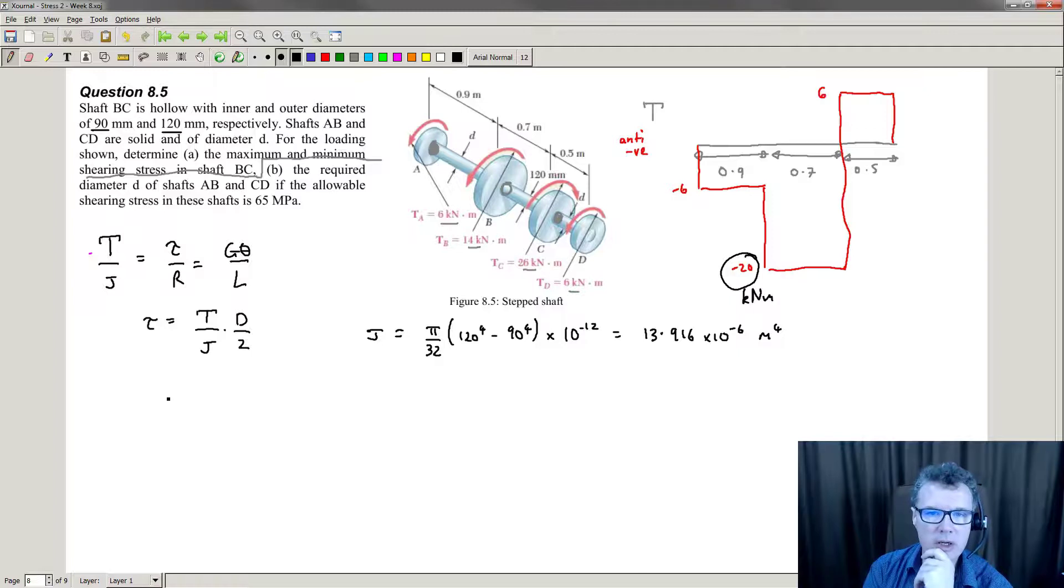We need to find the minimum and the maximum shear stress. This is actually straightforward. The minimum values we're going to put in are 20,000. Not too bothered about the plus or minus sign. J is 13.916 times 10 to the minus 6.